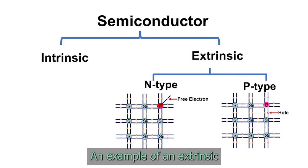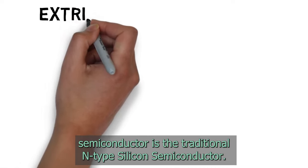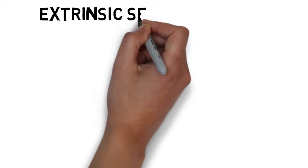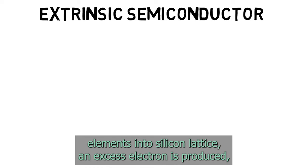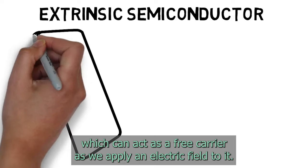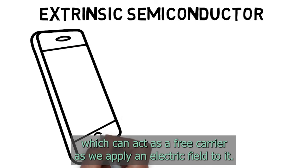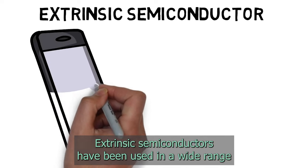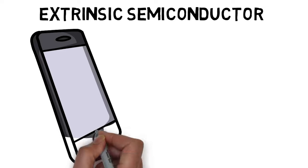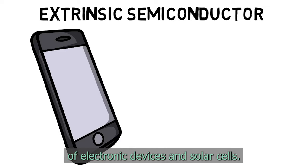An example of an extrinsic semiconductor is the traditional N-type silicon semiconductor. By doping group 6 elements into silicon lattice, an excess electron is produced, which can act as a free carrier as we apply an electric field to it. Extrinsic semiconductors have been used in a wide range of electronic devices and solar cells.